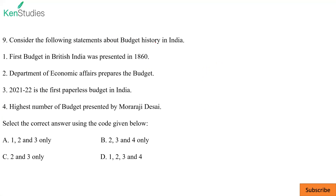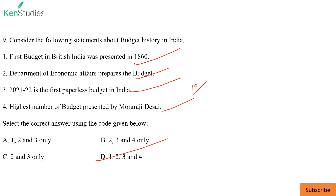Question nine: budget history in India. First budget in British India was presented in 1860, after the Government of India Act 1858 transferred power to Queen Victoria — correct. Department of Economic Affairs prepares the budget — correct. 2021-22 is the first paperless budget in India — correct. Highest number of budgets presented by Morarji Desai, who presented 10 budgets — correct. All four statements are correct. D is the answer.